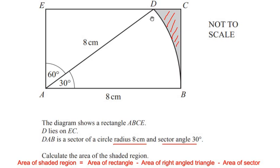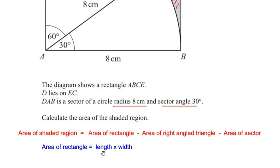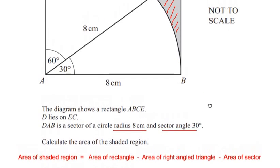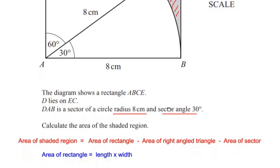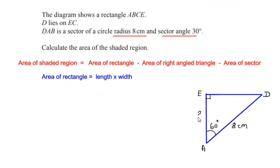The area of the shaded region is: area of rectangle minus area of right angle triangle minus area of sector DAB. The area of rectangle is length times width. In the diagram only the length is given as 8 centimeters, but the width is missing. So to find the width EA, we are going to consider the right angle triangle EAD.